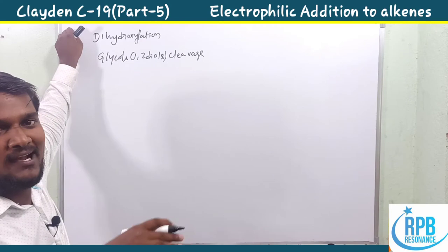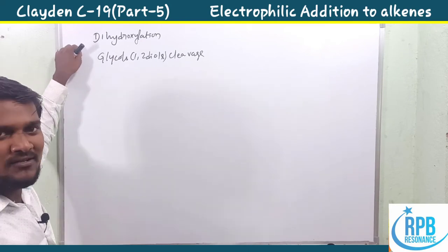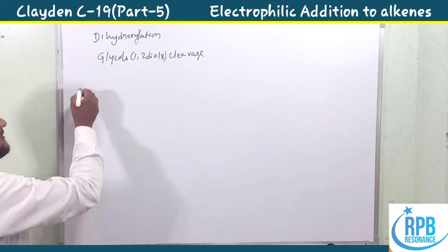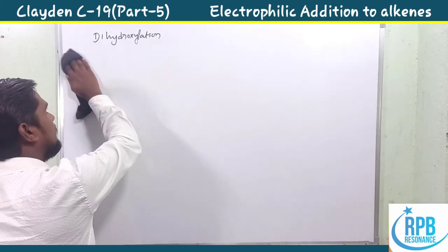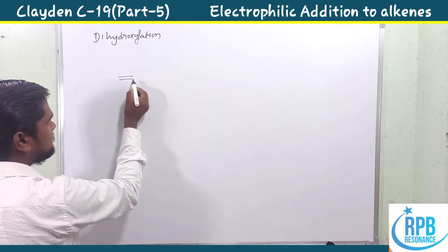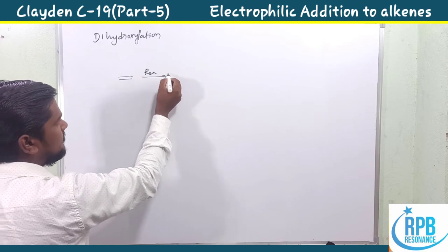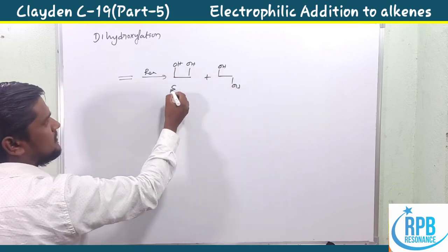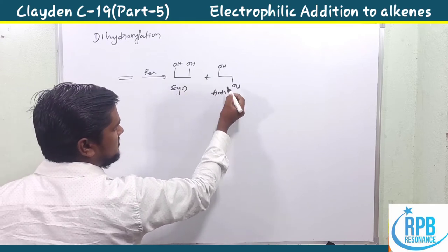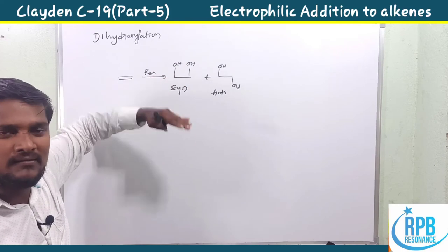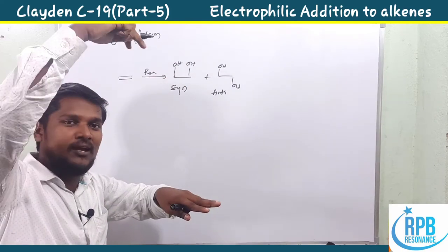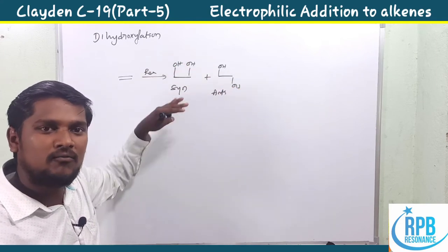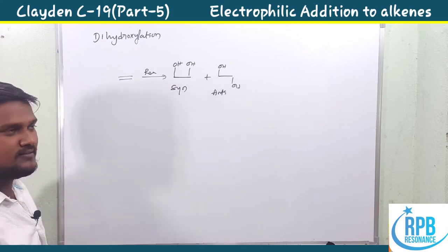We are discussing two things: first, dihydroxylation — how it forms the dihydroxylated products — and second, how it is cleaved. After cleavage of the dihydroxyl product, we see what we get in different cases. Dihydroxylation means using a dihydroxylating reagent to get both hydroxyl groups on the same side (syn addition) or on opposite sides (anti addition).